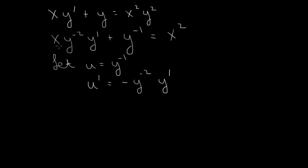we have x times y to the minus 2 times y prime. So that becomes, there's a missing minus sign. So minus x times u prime plus y to the minus 1, which is u, equals x squared.